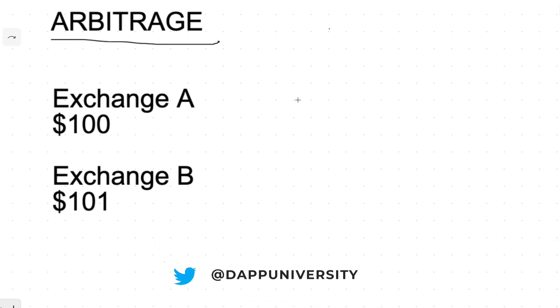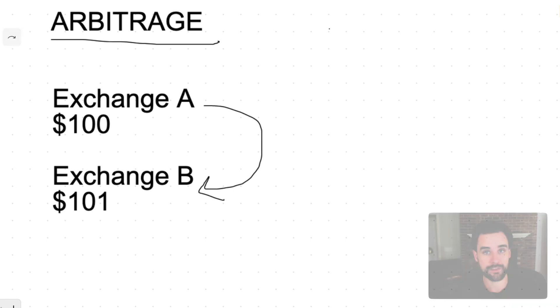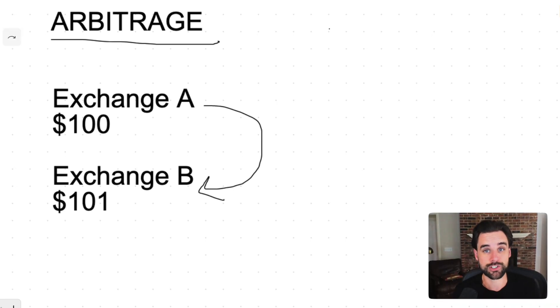Arbitrage is where you take advantage of price discrepancies between different cryptocurrency exchanges. So if a cryptocurrency costs $100 on exchange A and $101 on exchange B, you could buy it on exchange A and sell it on exchange B. The cool thing about flash loans is that you don't even have to own any of this cryptocurrency in order to perform this operation.